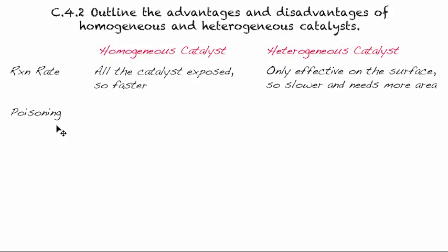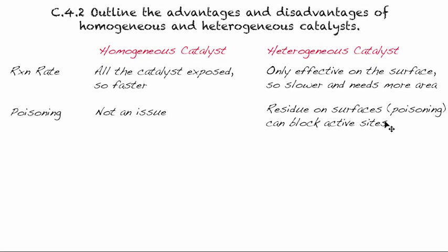Poisoning — this is something you'll get to see in C.4.3. Poisoning is not an issue in homogeneous catalysts, but it is an issue in heterogeneous catalysts, so it's a disadvantage. Poisoning means there's a residue on the surface of your catalyst that blocks your active site, and therefore reduces the effectiveness of your catalyst.